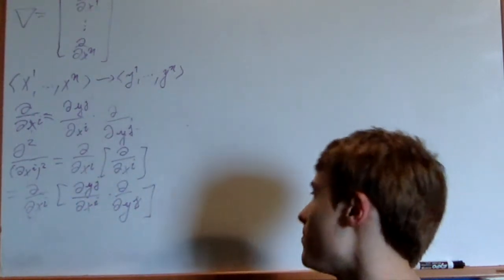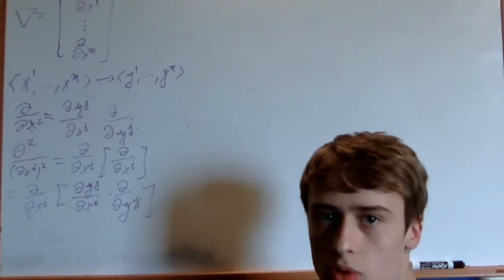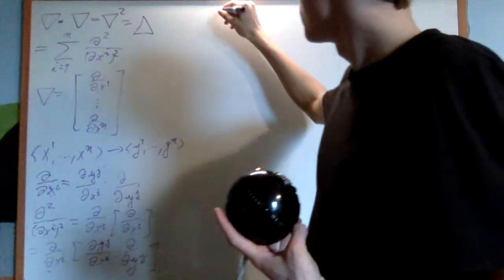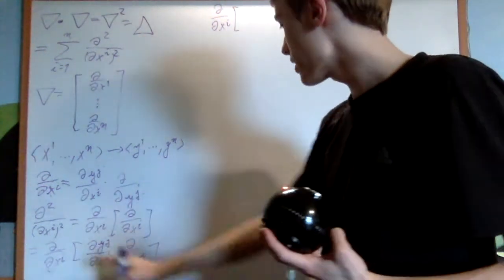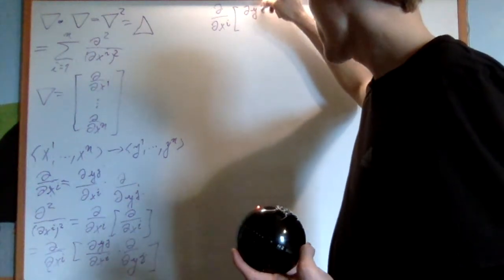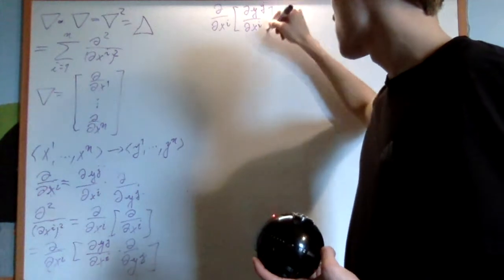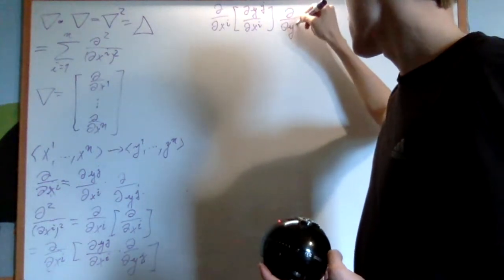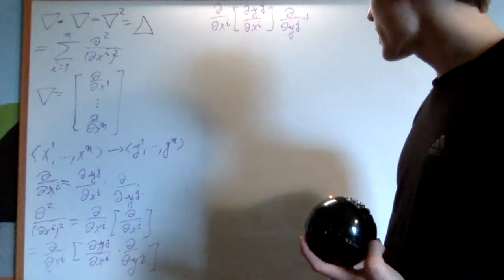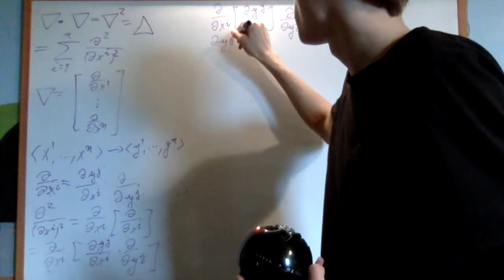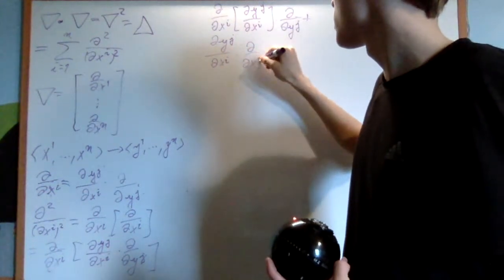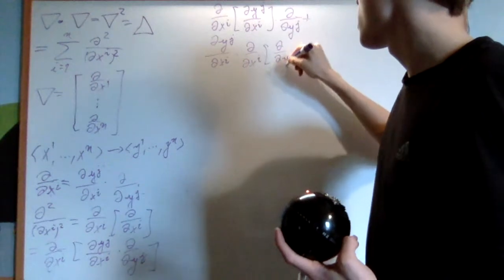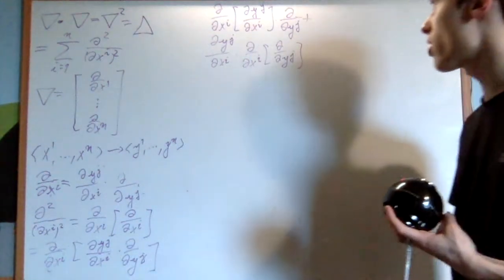Now what should we do with this? Well, the obvious answer is to do the product rule. So I'm going to move it up here. Product rule: we're going to have del on del xi applied onto del yj on del xi, multiply this by del on del yj. Then we add del yj on del xi times del on del xi applied to del on del yj. This is just simple product rule.